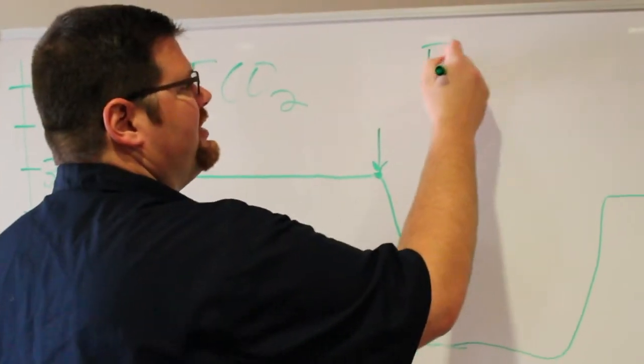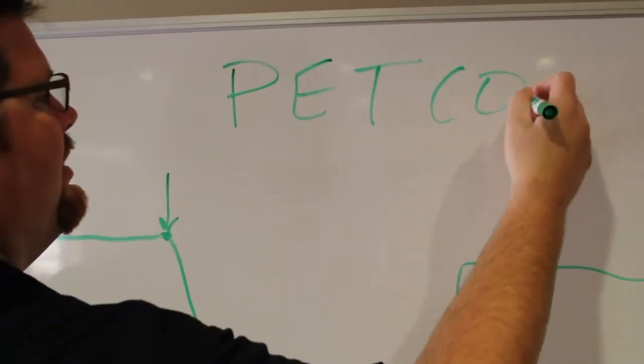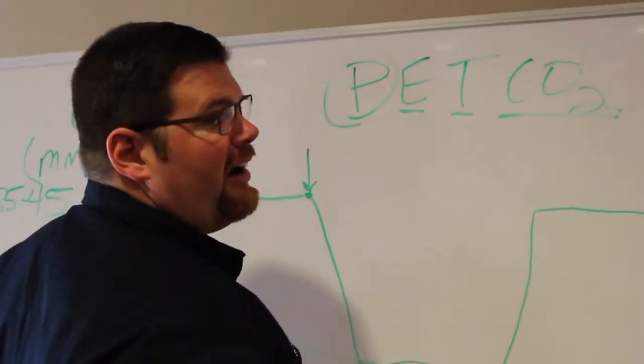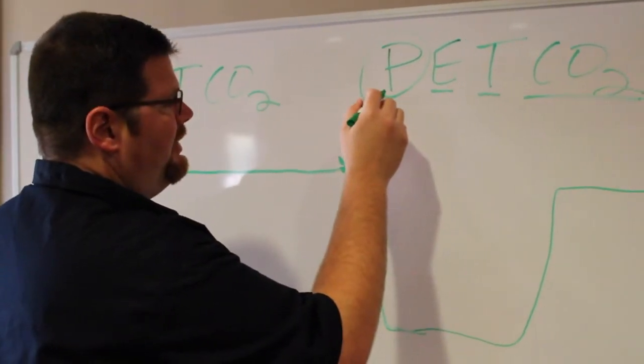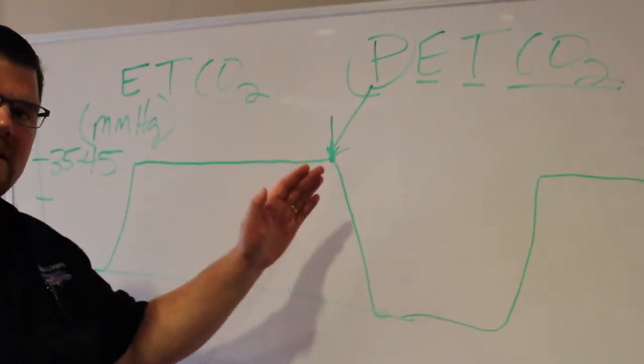There's also something you may see that is labeled the PETCO2. This is the peak end-tidal carbon dioxide measurement. The peak that we're talking about is right there, at that peak, where it peaks at its highest.